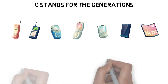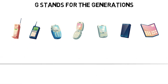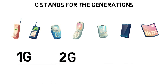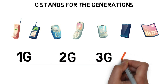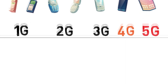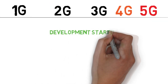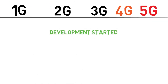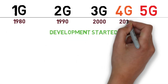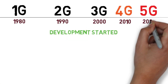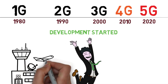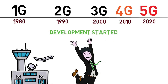This includes the 1G, 2G, 3G, 4G, and the latest 5G. The development started for 1G around 1980, 1990 for 2G, 2000 for 3G, 2010 for 4G, and 2020 for 5G.